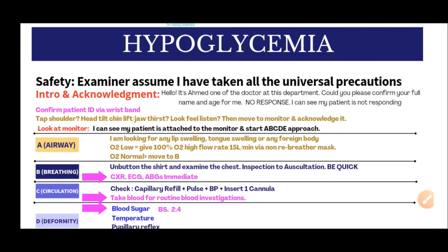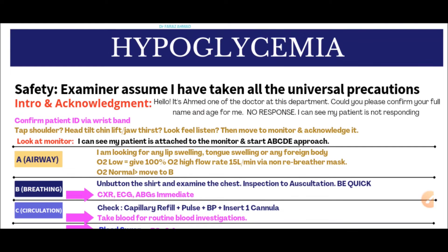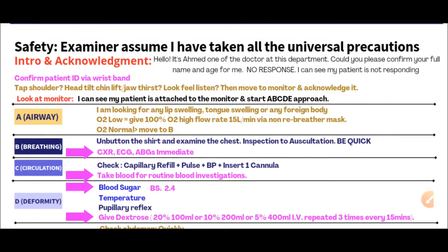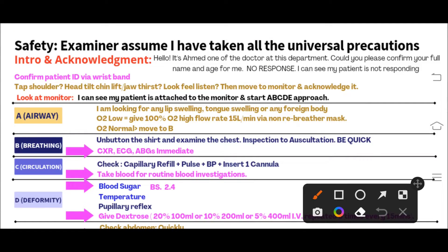The best approach on entering the room: first, introduce yourself to the examiner. Say 'Hello, I'm Dr. Ahmad, GMC number 780088' — whatever your GMC number is, you have to verbalize it. Then confirm you are a safe doctor by saying loudly: 'Examiner, assume I have taken all the universal precautions.' You must verbalize this because this is a simulation station, not a real patient.